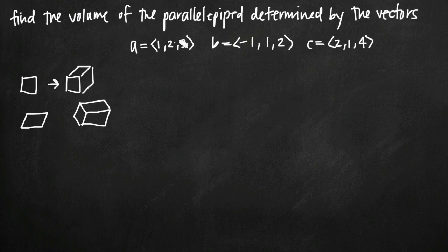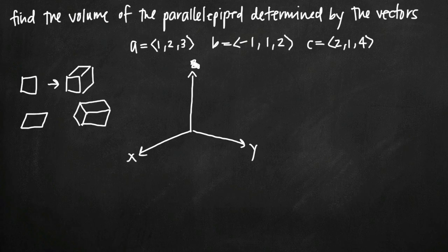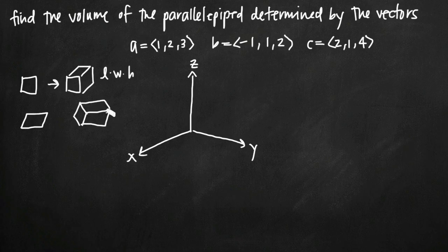We want to find the volume of that figure if these three vectors define this parallelepiped. We can think about a 3D coordinate system drawn using the right-hand rule, where we have x, y, and z coordinate axes. In the same way that the volume of a cube is length times width times height, the volume of a parallelepiped is also length times width times height — we find the area of the base and multiply by the height.